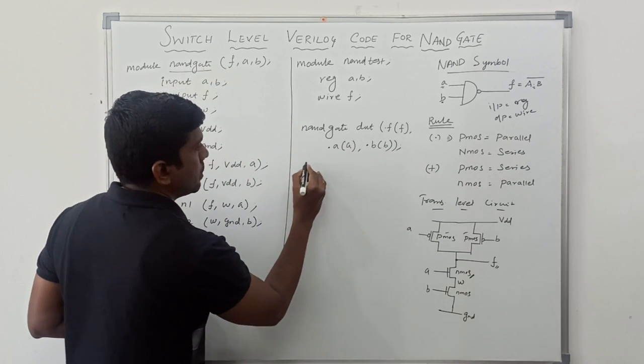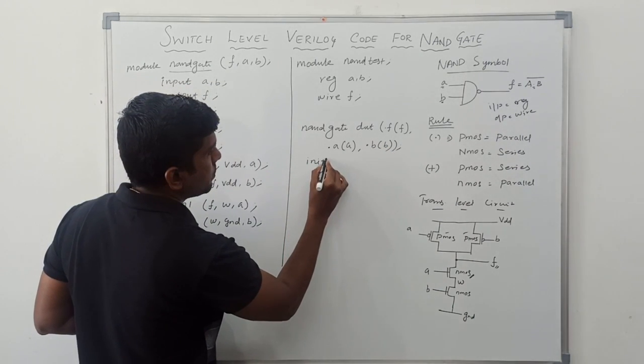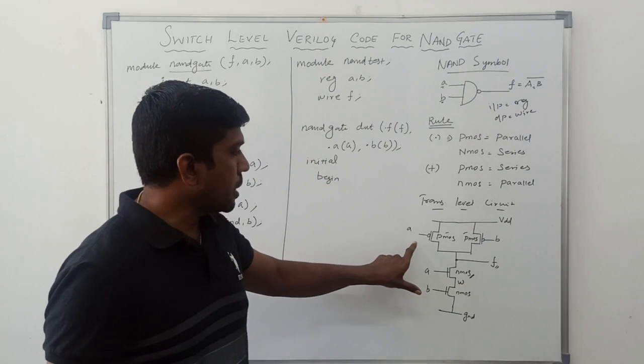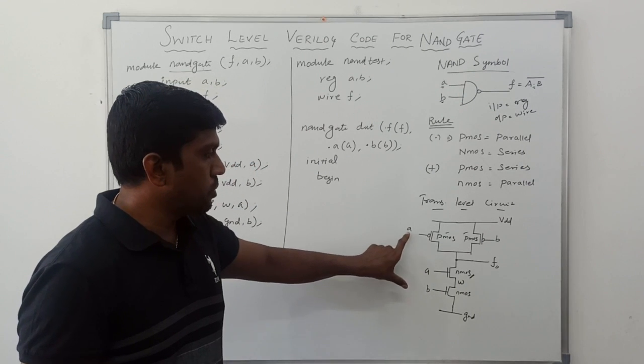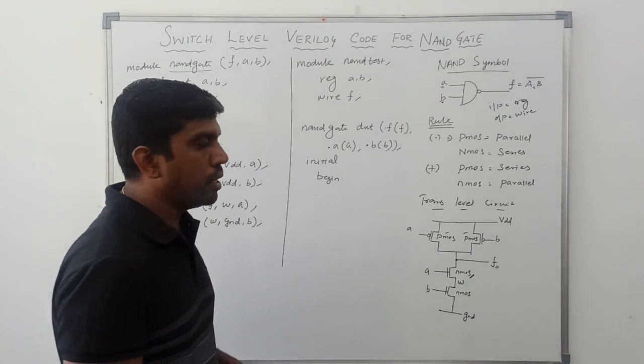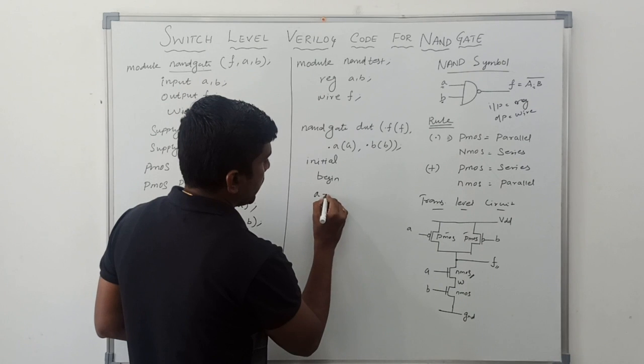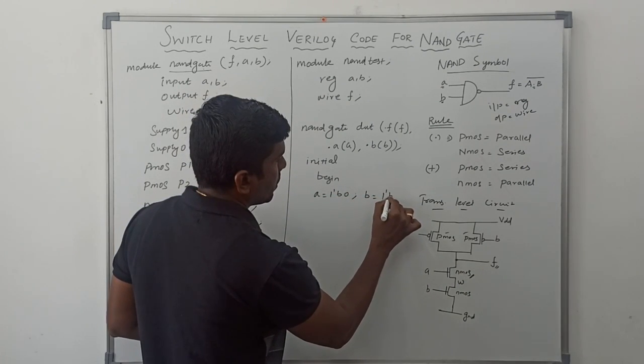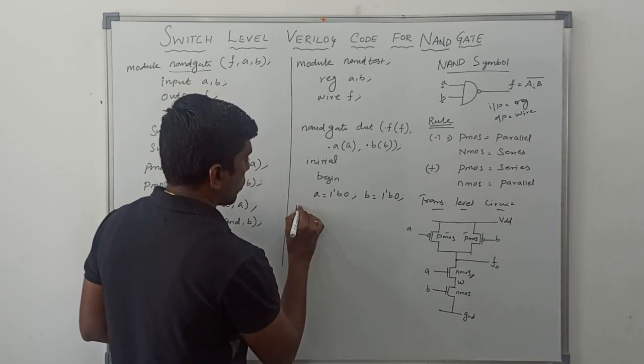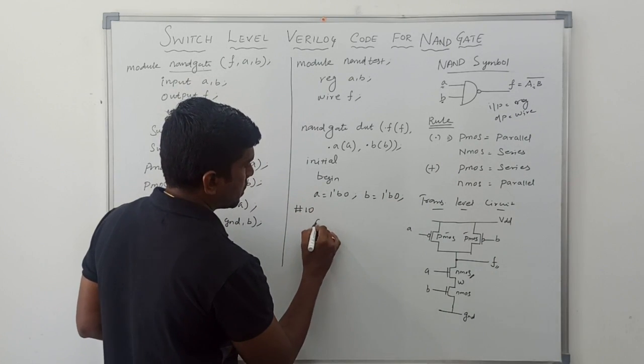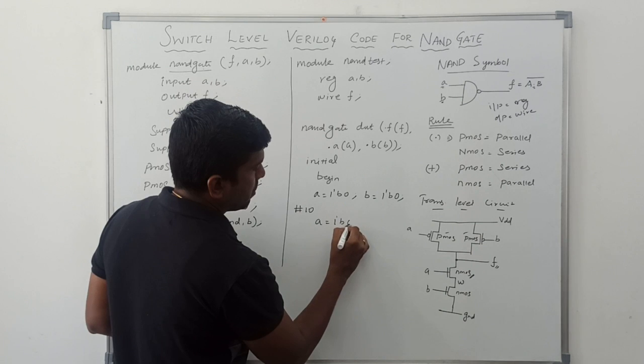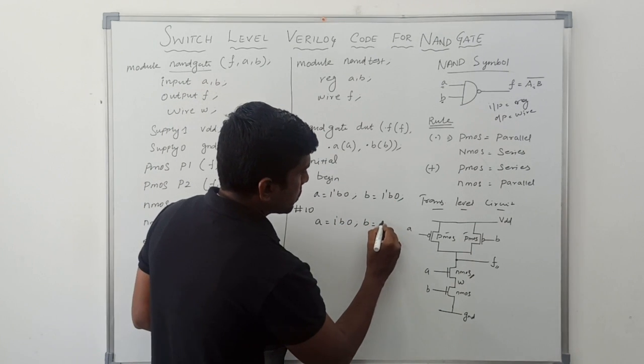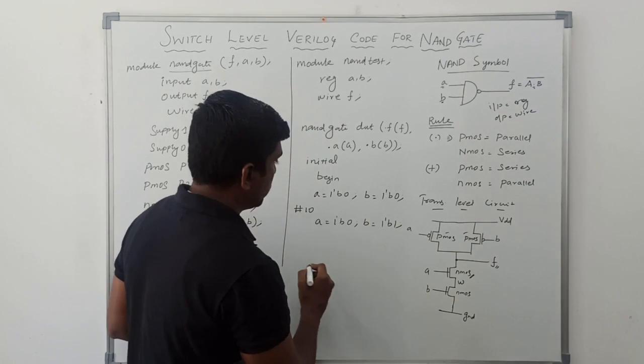Then, initial begin. Initially, these two input values A and B are set to be 0. A equal to 1'b0, B equal to 1'b0. After 10 nanoseconds, A value 1'b0, B value changes 0 to 1, so 1'b1.